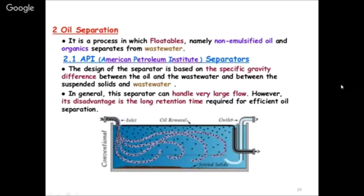Oil separation deals with floatable, non-emulsified oils. Two methods are used. The first is the American Petroleum Institute (API) separator: a tank in which oil floats to the top and is skimmed off. The design is based on the specific gravity difference - oil is lighter, so it rises. It can handle large flows with no restriction; it is just a tank designed so that oil automatically comes to the top for skimming. It is the simplest method.